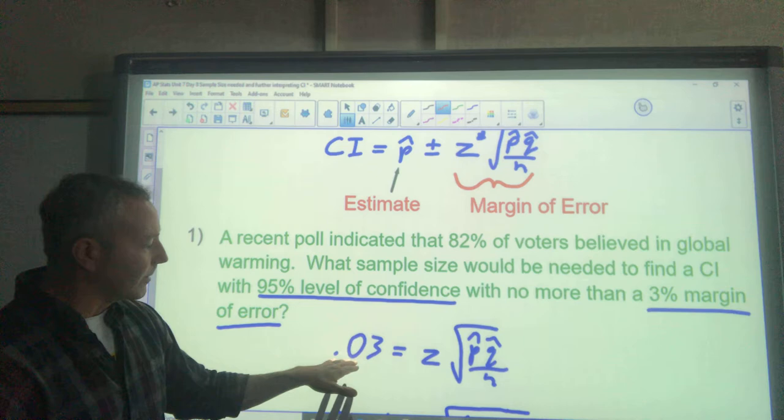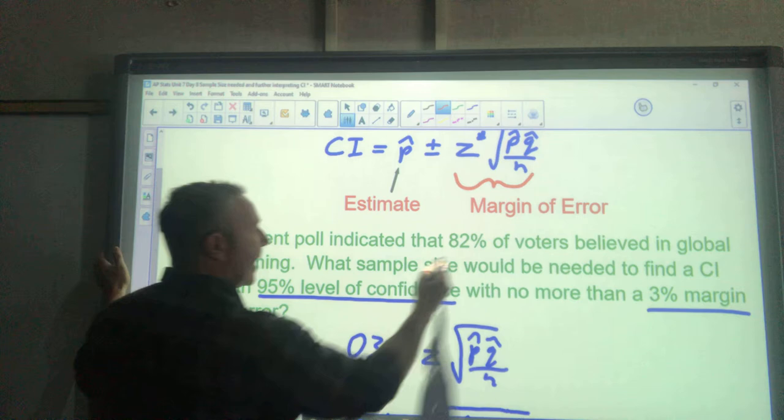Well, your margin of error is right there, and we want to achieve a 3%, so 0.03 equals the margin of error. And then they've told me that my suggested proportion is 82%.